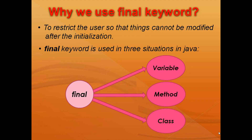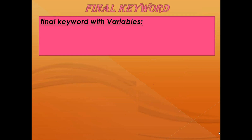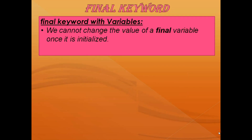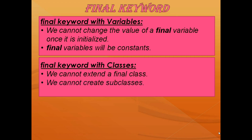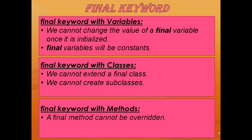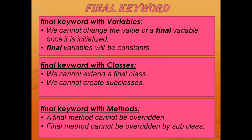Now let's take a look at what final does in each of these three situations. When we use the final keyword with a variable, we cannot change its value once it is initialized — meaning the final variable will be a constant. If we use final with a class, we cannot extend it, meaning we cannot create a subclass. If we use final with a method, that method cannot be overridden by a subclass.